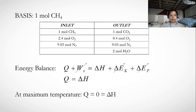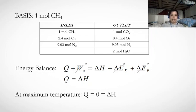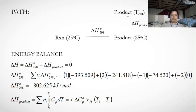For the energy balance, Q plus shaft work equals the change in enthalpy plus changes in kinetic and potential energy. With no shaft work, no kinetic energy, and no potential energy, the simplified equation is Q equals ΔH. At maximum temperature, Q equals zero, so ΔH equals zero.